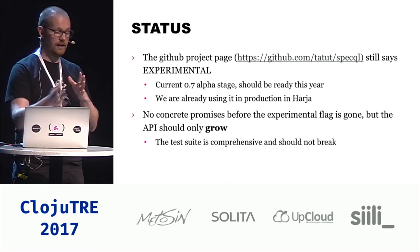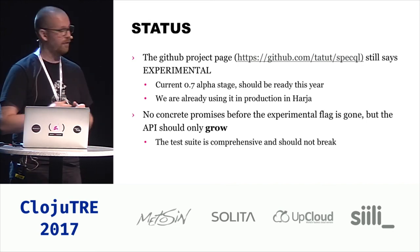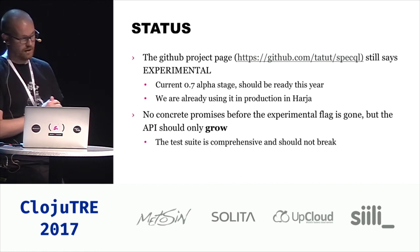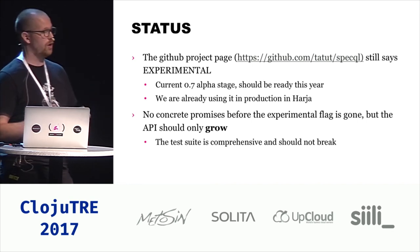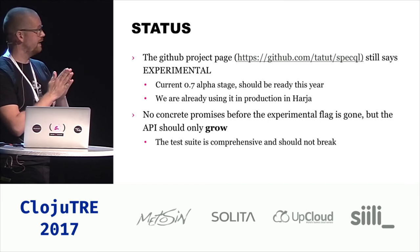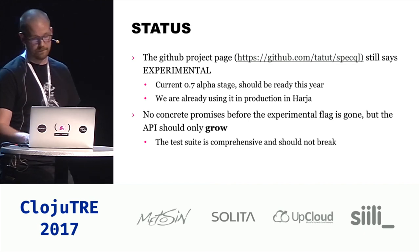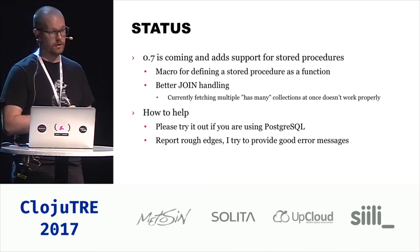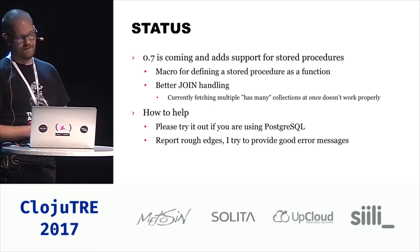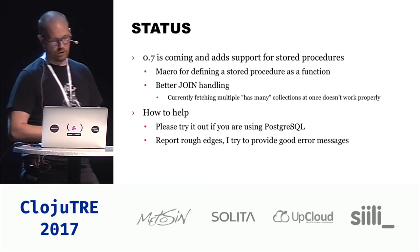Regarding the status of the project: the GitHub page still says experimental. We're currently at 0.7 alpha stage and should be ready this year. But we're already using it in production in our project called Harria, which is a large-scale road infrastructure project for the transportation agency. There are no concrete promises before the experimental flag is gone, but the API should only grow. The test suite is comprehensive and should not break. Version 0.7 will add support for stored procedures for completeness, a macro for defining stored procedures as functions, better join handling — there are currently problems with multiple bags and many joins fetched at once, which is a common ORM problem, but I plan to rewrite the join handling to get that fixed.